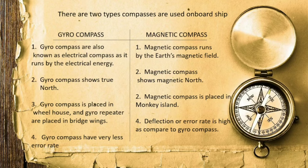The next point is that the gyro compass has a very low error rate — almost negligible — because it is an electrical compass indicating direction precisely. Whereas the magnetic compass has a higher deflection or error rate compared to the gyro compass.